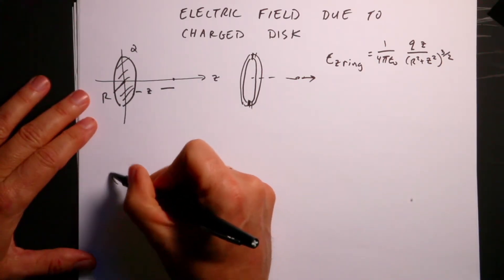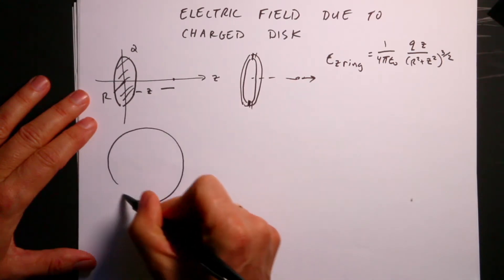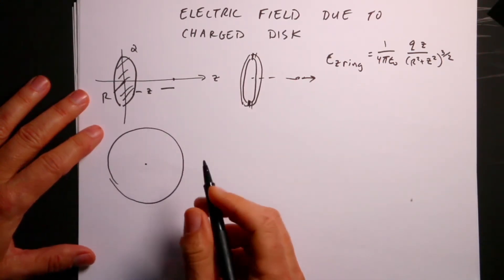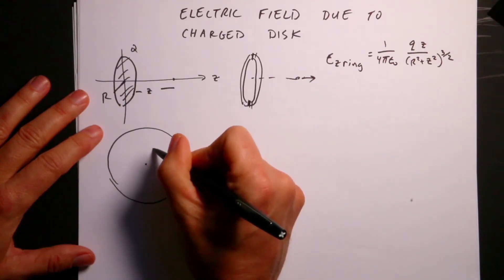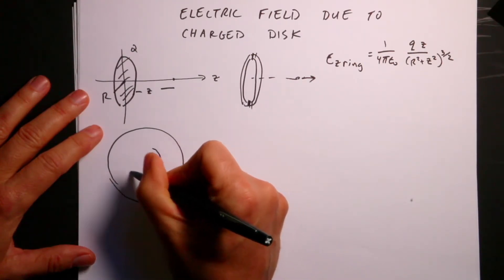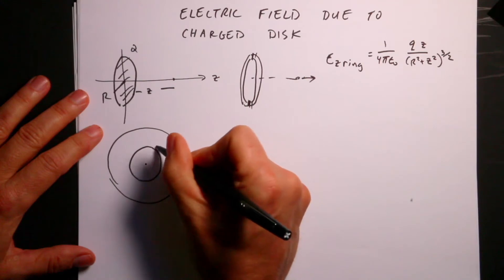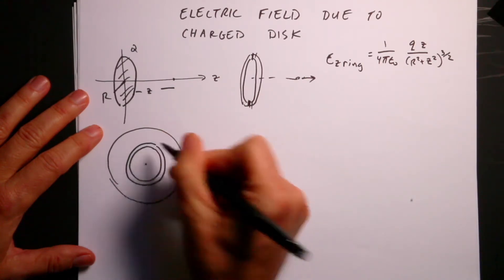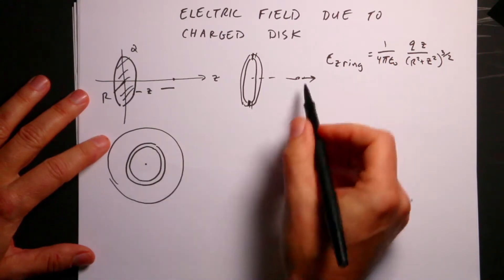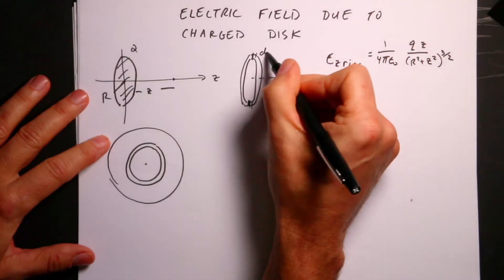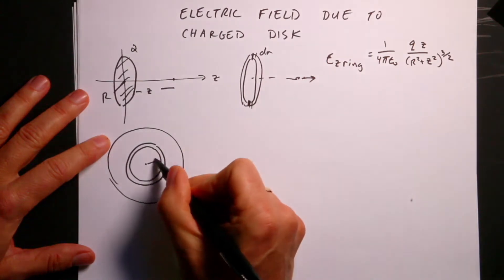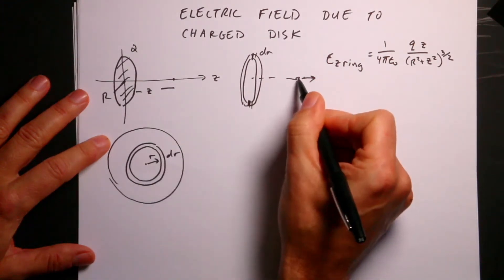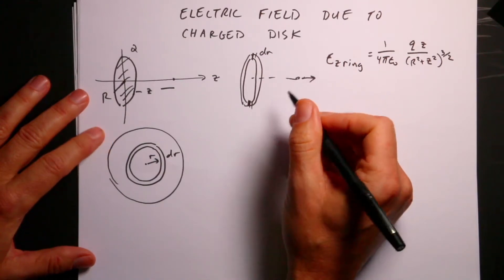Let me redraw this picture. Here's the disk — now you're looking at the disk. If I break this into an arbitrary ring, here's a ring of thickness dr and radius r.